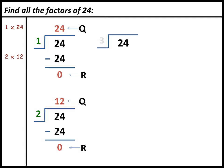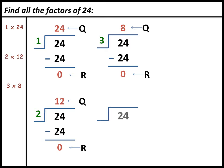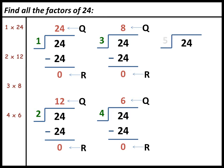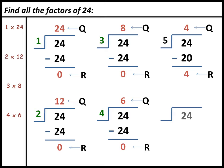Then we divide 24 by 3 and get quotient 8 and remainder 0. So 3 is a factor of 24. Then we divide 24 by 4 and get quotient 6 and remainder 0. So 4 is a factor of 24. Then we divide 24 by 5 and get quotient 4 and remainder 4. So 5 is not a factor of 24. Leave 5.